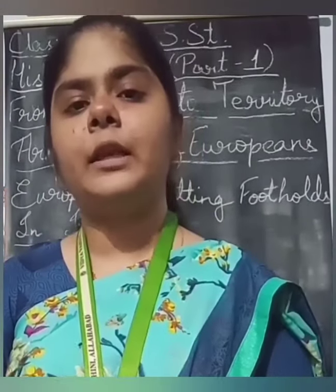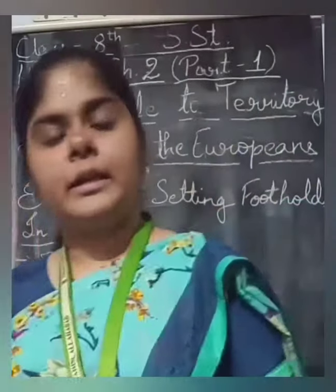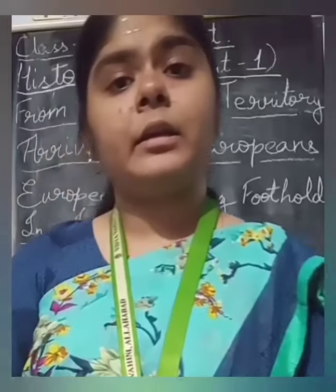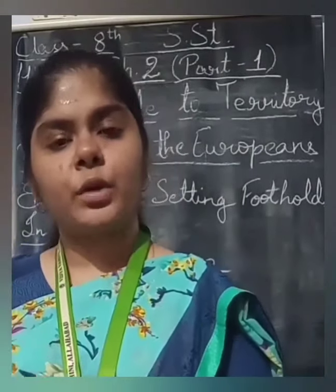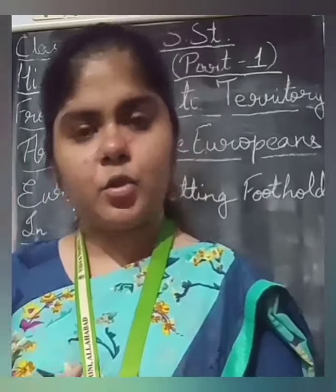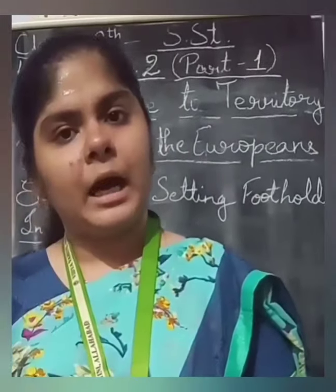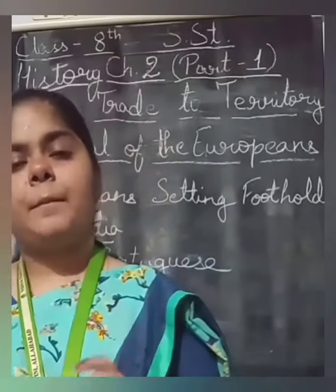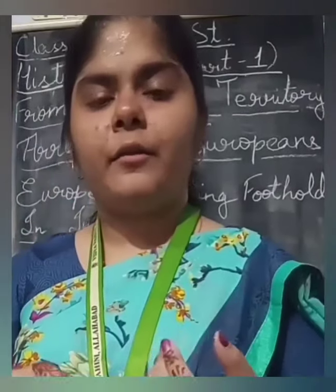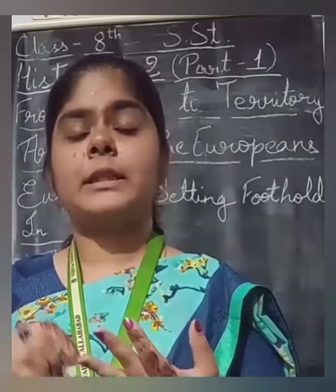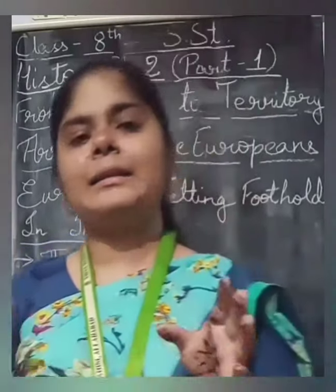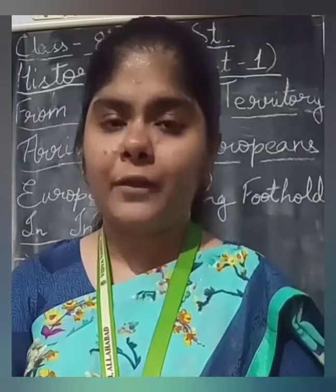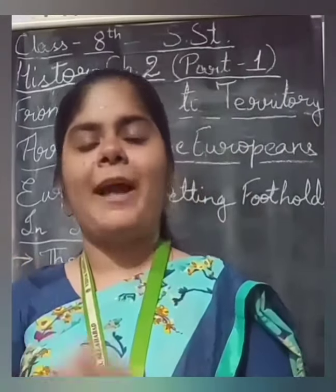The Dutch established their trading centers in Ahmedabad, Surat, Agra in UP, Patna in Bihar, and many other places. They mainly traded in cotton, silk, indigo, and opium. They were doing good trade, but in the middle of the 18th century they were wiped out by the British.